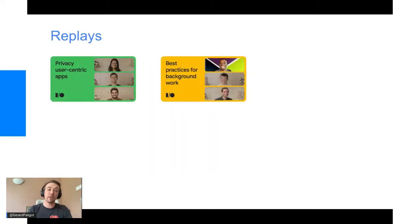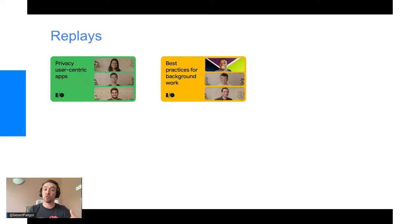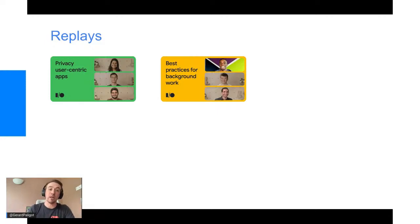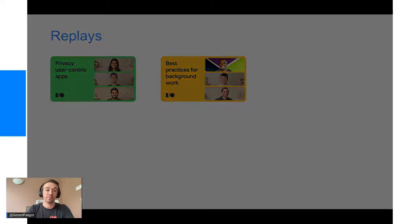Il y a d'autres informations liées à Android 13 : privacy dashboards, notification permission, location accuracy — qui vous permet de choisir entre localisation précise ou approximative — nearby device, et le keyboard notification qui évite de partager des informations sensibles entre différentes applications.